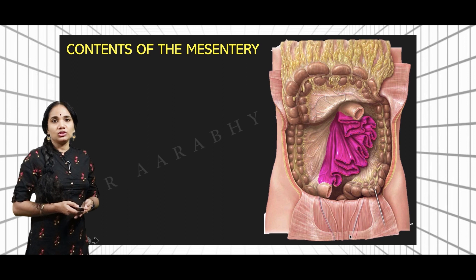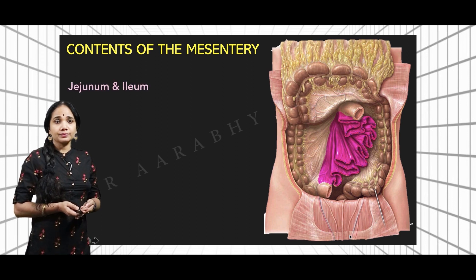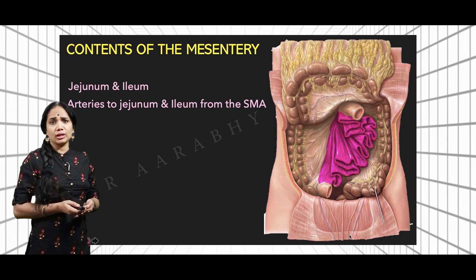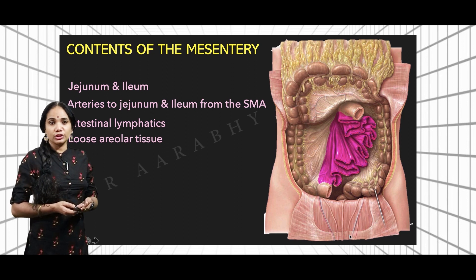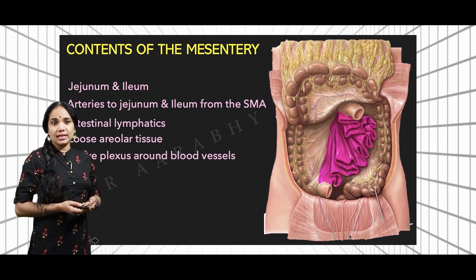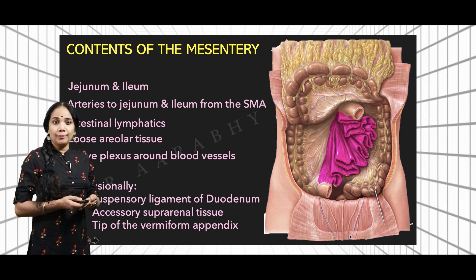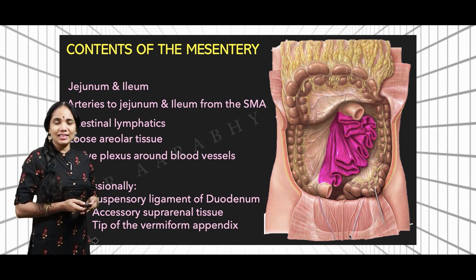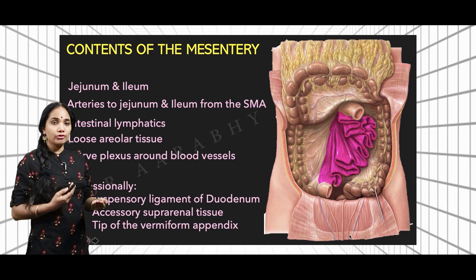Now let's see what are the contents of the mesentery. The mesentery suspends the small intestine, so the major contents are the jejunum and the ileum. We also have the arteries to the jejunum and ileum from the superior mesenteric artery, lymphatics, loose areolar tissue, plexuses around the blood vessels, and a lot of fat. Occasionally seen in the mesentery are the suspensory ligament of the duodenum, aberrant or accessory suprarenal tissue, and the tip of the vermiform appendix. The first five structures — the small intestine and the structures going to and from it — are definitely present.